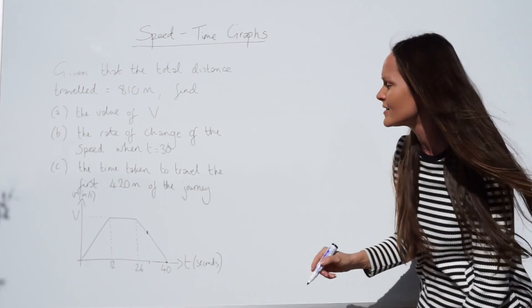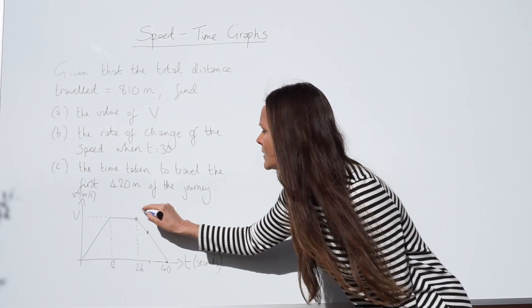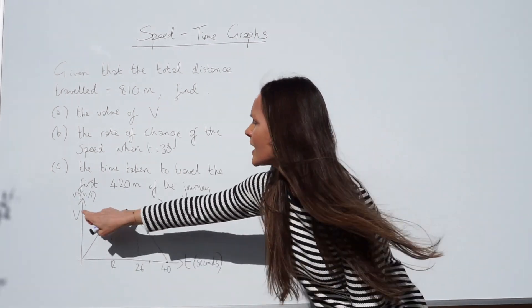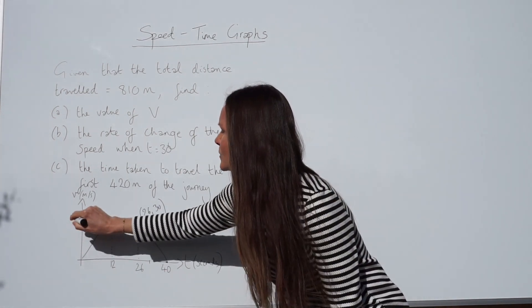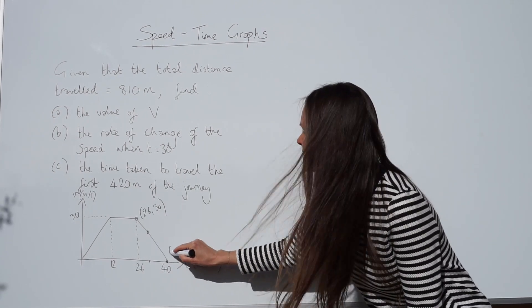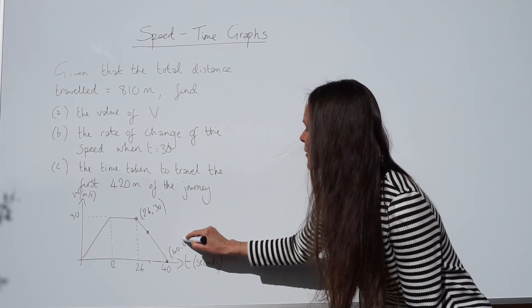To work out the gradient of a line, you need the values of two points. So we've got one here, 26, 30, because remember we worked out the value of V. This was 30. And down here, we have another point, 40, 0.